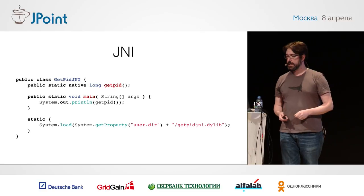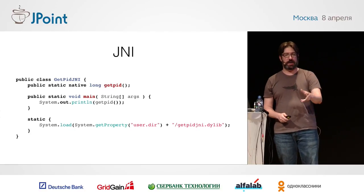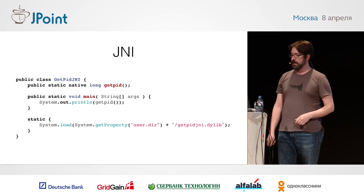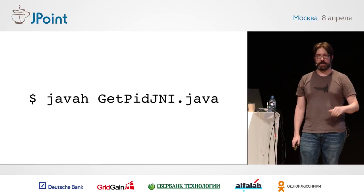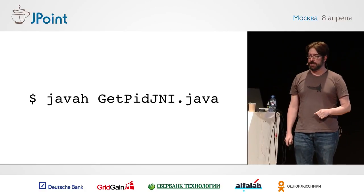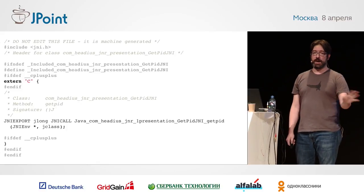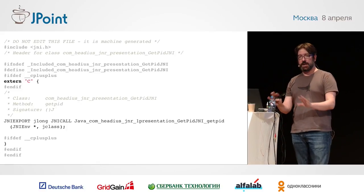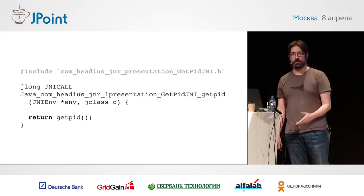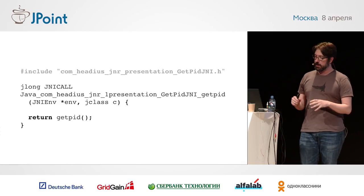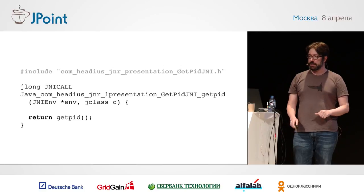It starts out looking pretty easy — you just stick the 'native' keyword on there and now you're calling out of Java into the C world. But then it gets scary. You have to run javah to generate a header file and some stub implementations, which is way out of our element if you're a Java developer that doesn't know a lot of C code. The implementation of the actual getPID call doesn't look too bad, but there's an incredibly mangled function name so the JVM knows how to bind it into the right place.